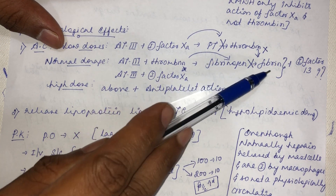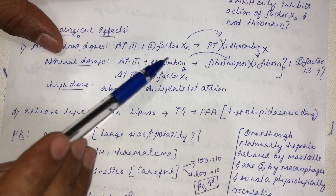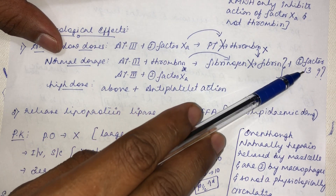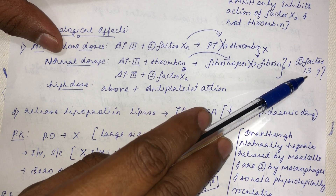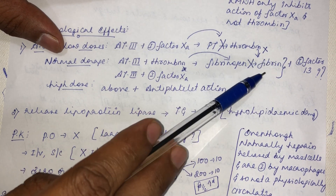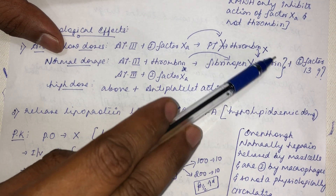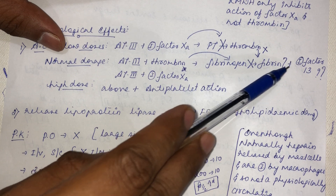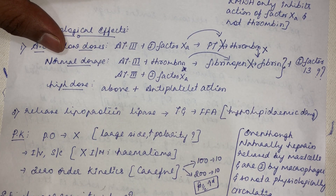An added advantage of heparin is that along with inhibiting thrombin and the fibrinogen-to-fibrin conversion, it also inhibits factor 13 — the tissue-stabilizing factor. Factor 13 normally stabilizes the fibrin meshwork around a clot; by inhibiting both fibrin formation and factor 13, heparin effectively stops clot formation.